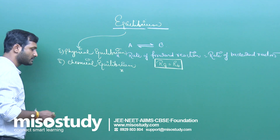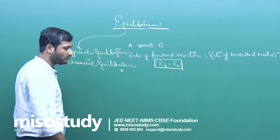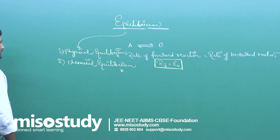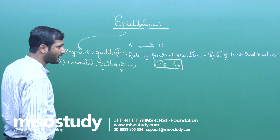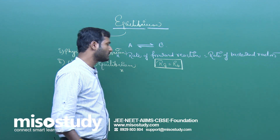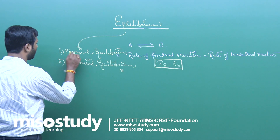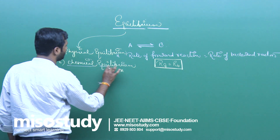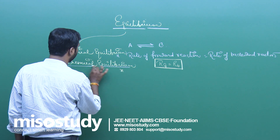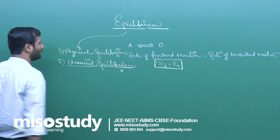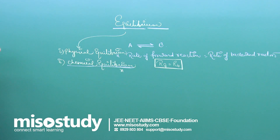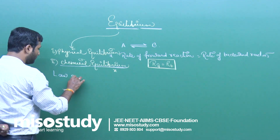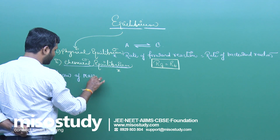For example, melting of ice, freezing of water, and conversion of I₂ solid into I₂ gas — these are things we discuss when studying physical equilibrium. Generally, questions are asked from chemical equilibrium. In chemical equilibrium, we study the law of mass action.